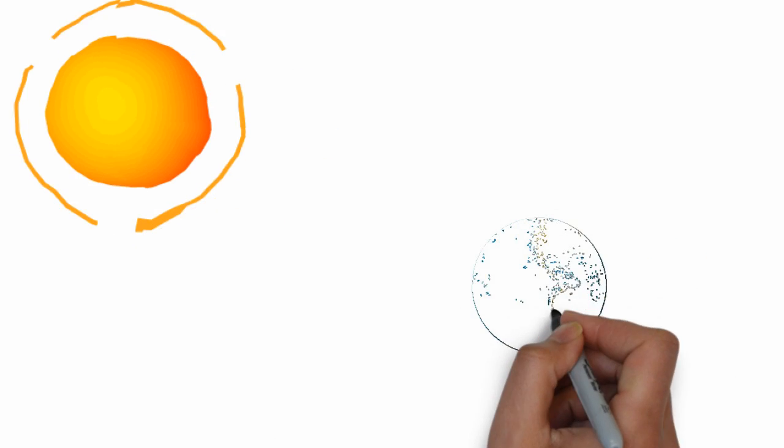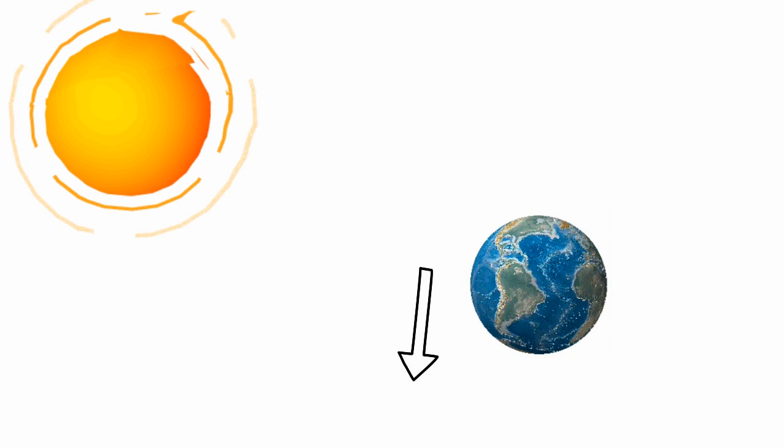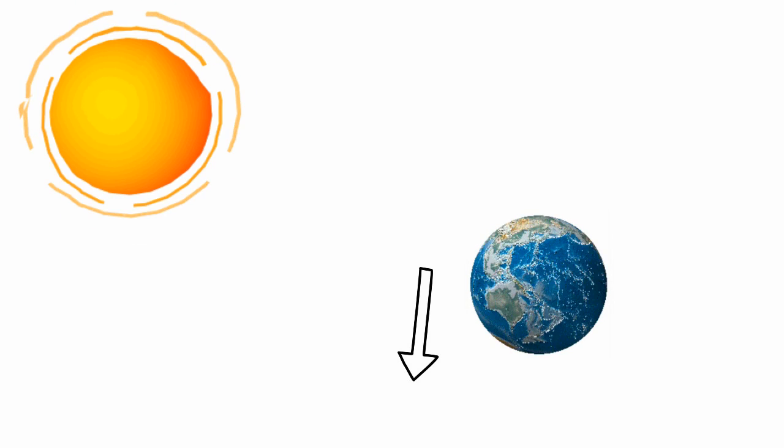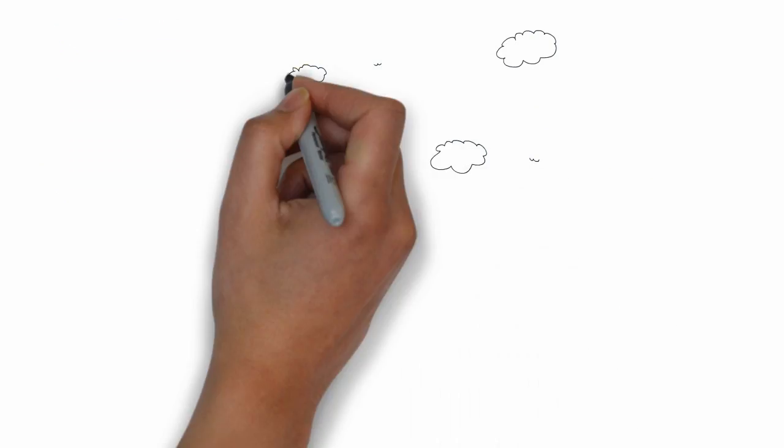The reason the sun looks yellow to us on Earth is that our atmosphere scatters light from the sun, so the apparent color of the sun changes. This same scattering effect is why the sky looks blue in the daytime instead of black like at night.